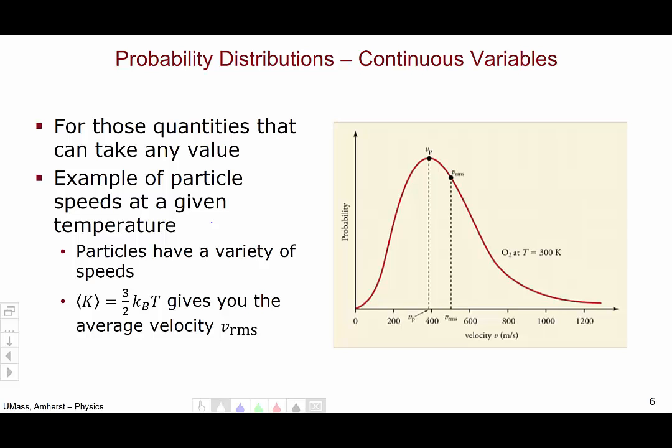At a given temperature, particles have a huge variety of different speeds. The expression K equals 3 halves KBT tells you the average kinetic energy, or the average speed V RMS.